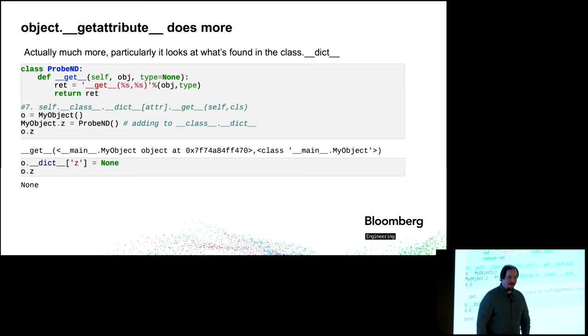But actually, __getattribute__ is doing a lot more than that. __getattribute__ from object, which is where that code actually lives, is actually looking at what it found in the class dict. So we create this probe nd object, and we'll go ahead and make that a class attribute on my object. Now, it's z, so of course, we expect we're going to call o.z. It's going to go up to the class. It's going to find z. It's going to return z, but it actually doesn't. What it actually does is it calls __get__ on the z that it found once it found that there is a __get__ there.